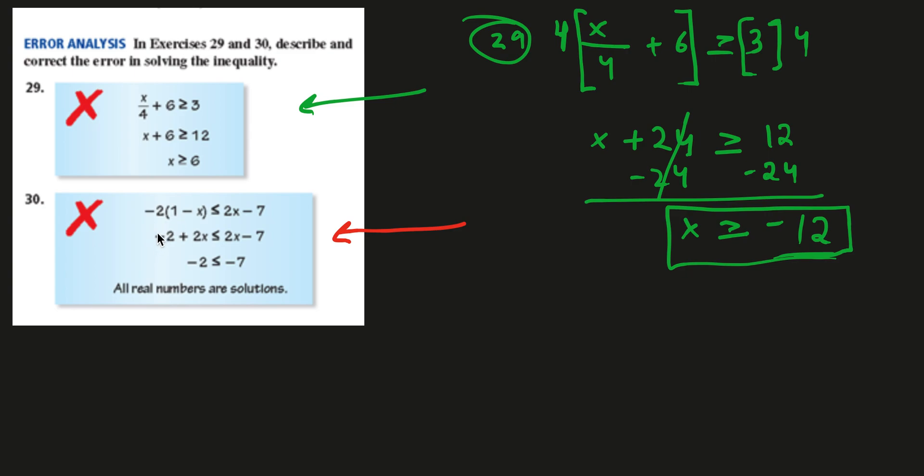Seems like the person distributed, so did they distribute correctly? Negative 2 plus 2x, yep, that's good. Negative, negative, positive, less than or equal to 2x minus 7. Seems like they subtracted 2x to both sides, and they got negative 2 is less than or equal to negative 7. I think all of this is correct. This is all correct. This is all good.